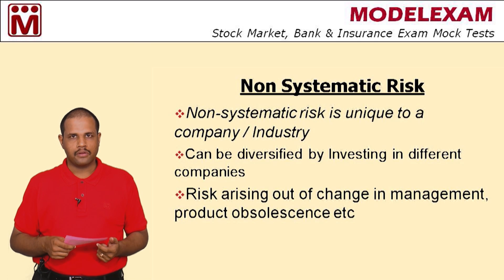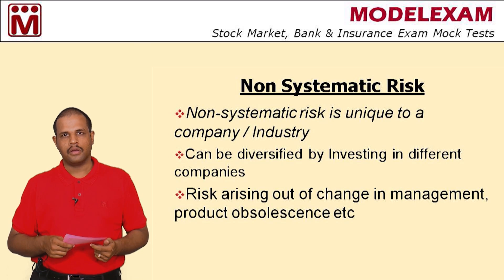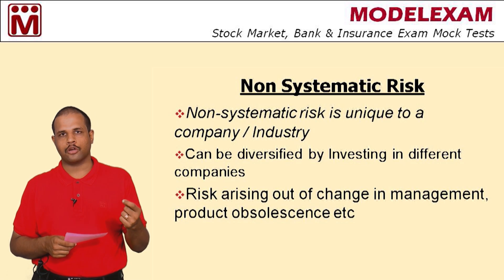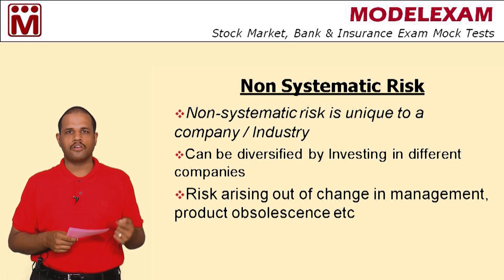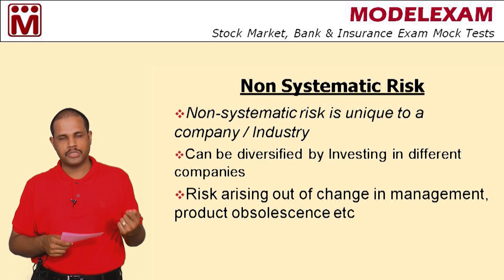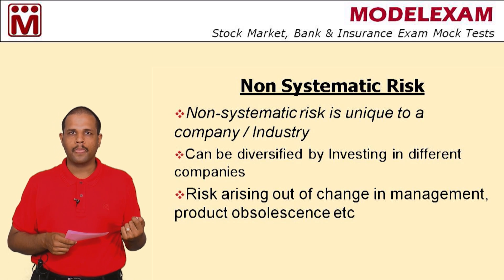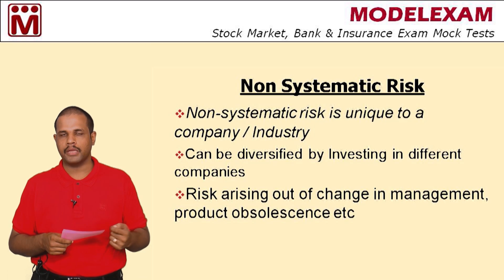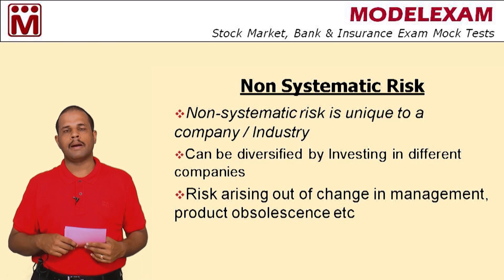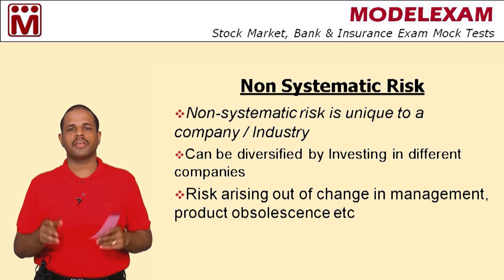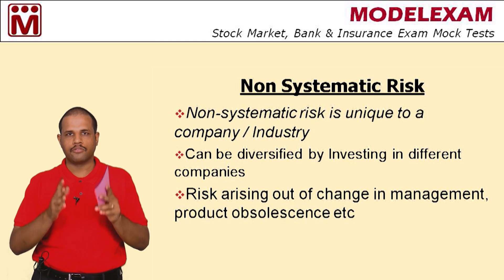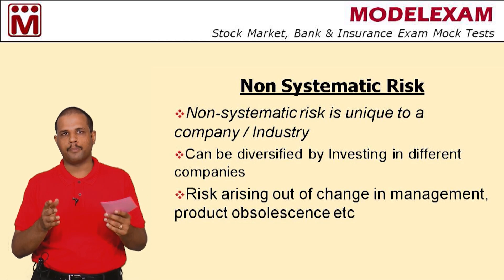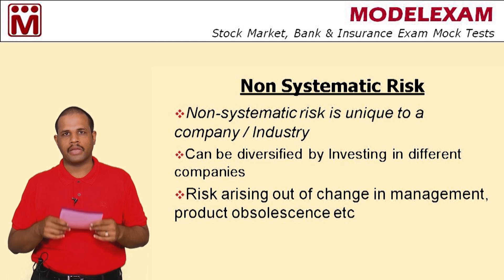Market risk or systematic risk refers to features which are beyond our control, like macroeconomic factors. Non-systematic risk refers to features due to changes in a particular industry or a particular company. These two risks combined together is known as total risk, and it will affect mutual fund performance. Thank you.